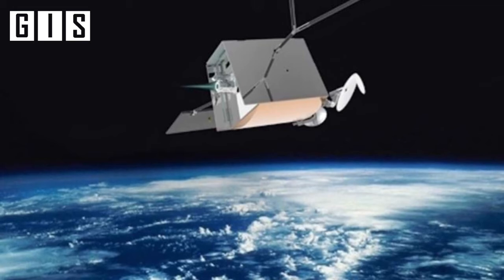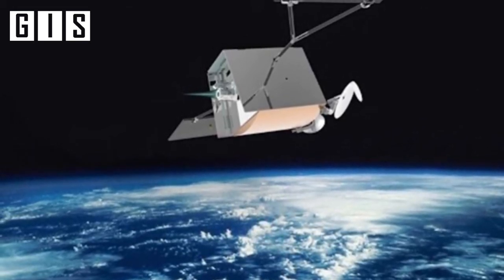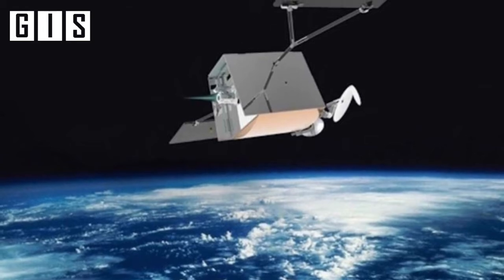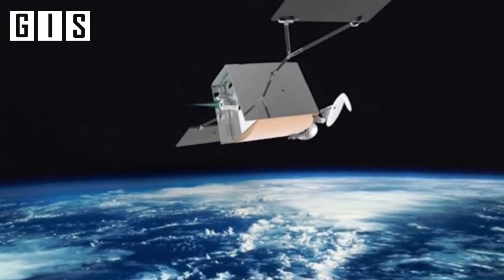It was slated to launch a constellation of 650 spacecraft, and its plans included providing internet coverage for the Arctic. So far, it has launched 74 satellites for the project.